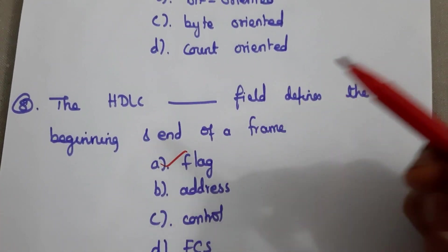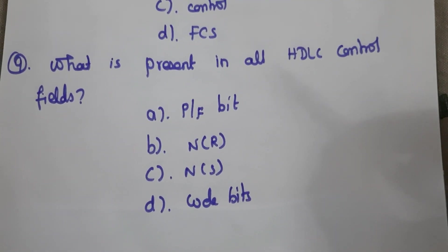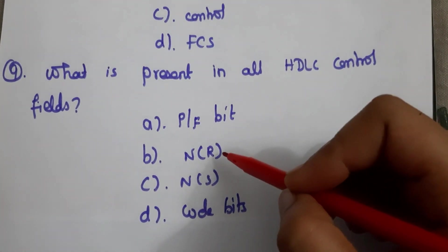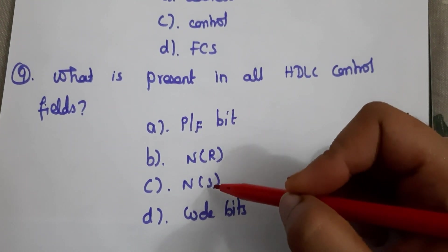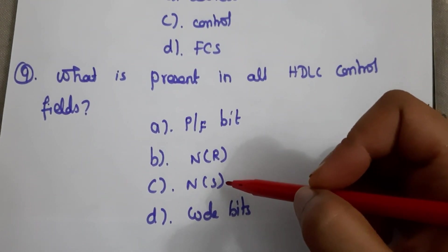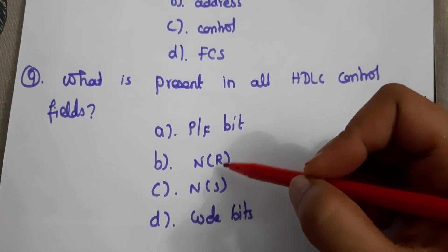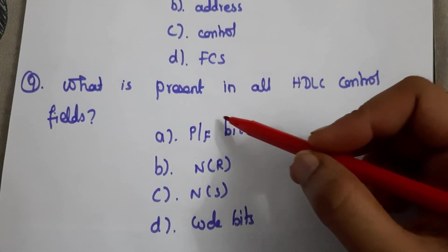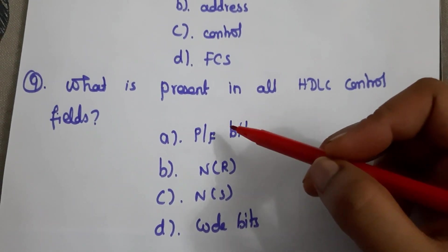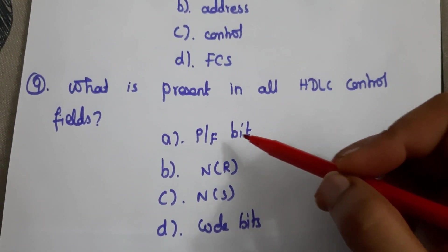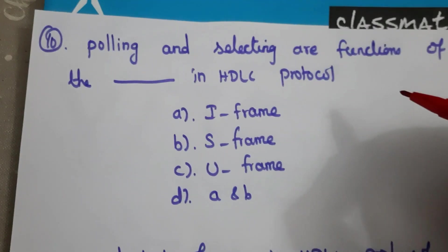Next question: what is present in all HDLC control fields? The N(R) field, N(S) field, and P/F (Poll/Final) bit are examined. The I-frame and S-frame do not contain the N(S) bit in all cases, and the U-frame does not have N(R) or N(S). The P/F (Poll/Final) bit is present in all HDLC control fields, so the answer is A.